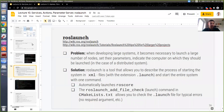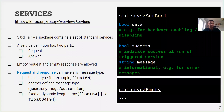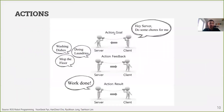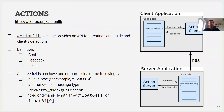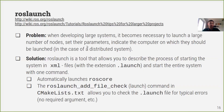Last time in lecture 10 we discussed services and actions. We realized our own service inside our test package with signal generator and signal filter nodes. This service computed the median of a window of signal values. We also saw how actions work with the turtle simulation example, and discussed the parameter server, which we used to set the size of the moving average filter window without recompiling code.